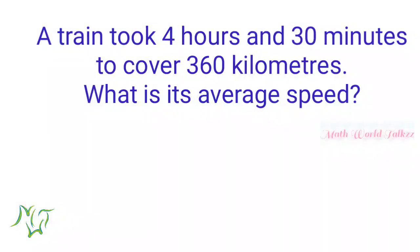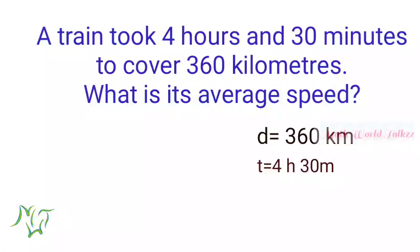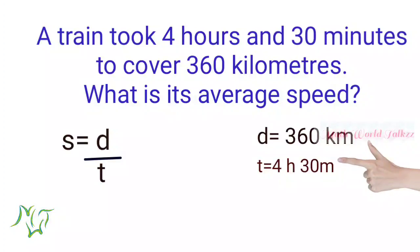A train took 4 hours and 30 minutes to cover 360 kilometers. What is its average speed? Here distance is given and time is given, so we can easily find its speed using: speed is equal to distance by time. But the time is given in both hours and minutes — 4 hours 30 minutes.